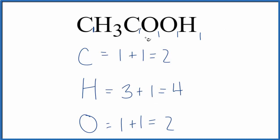To find the total number of atoms for CH3COOH, we just add these up. Two plus four is six, plus two. Eight total atoms for the acetic acid molecule.